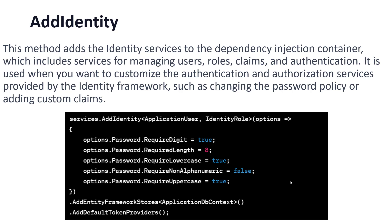In the AddIdentity method, you have to define first of all ApplicationUser as well as IdentityRole. Using the options, you can configure the password policy: RequiredDigit is true, RequiredLength is a minimum of 8, RequiredLowercase is true, RequiredNonAlphanumeric is false, and RequiredUppercase is true. So uppercase is required, lowercase is required, minimum length is 8, and required digit is true.